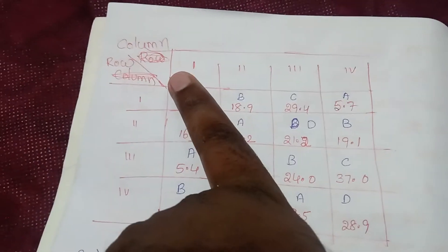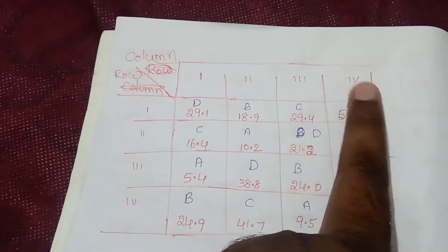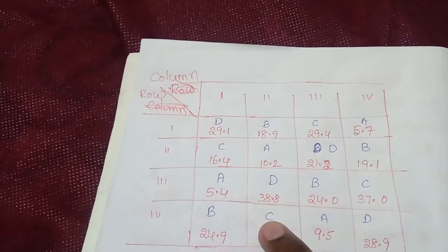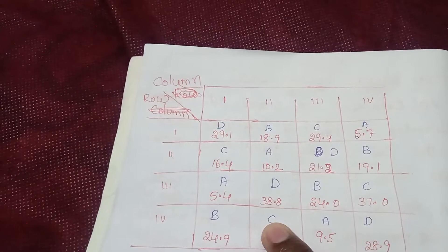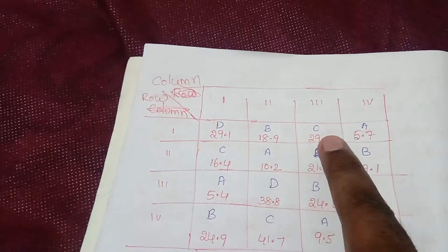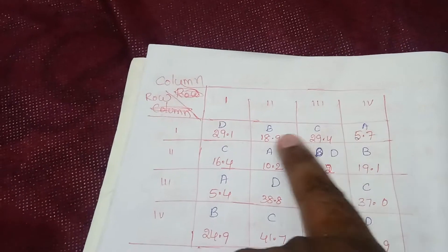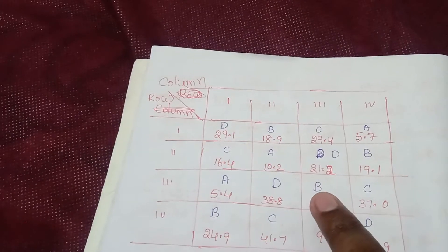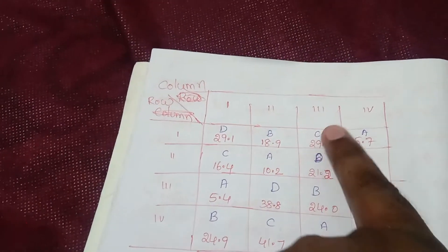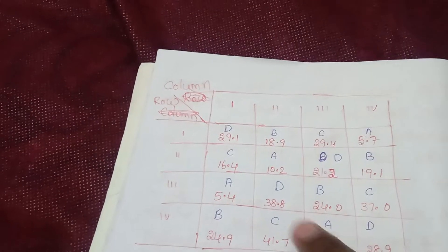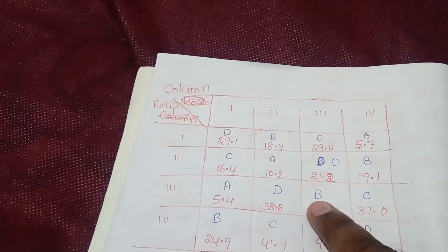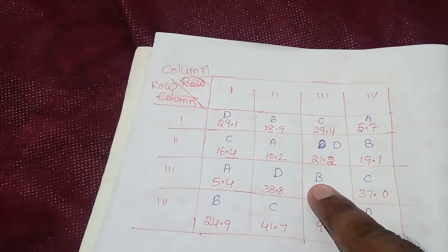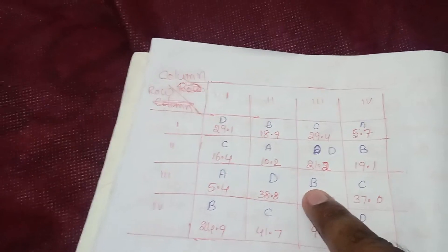This is the first column, second column, third column, and fourth column. Similarly, rows are also given: first row, second row, third row, fourth row — a four by four matrix. Note that letter A is repeated only one time in each row and one time in each column. Any letter, such as B, appears only one time per column and only one time per row. This is why this design is called a Latin Square Design — any treatment is repeated only one time, row-wise and column-wise.